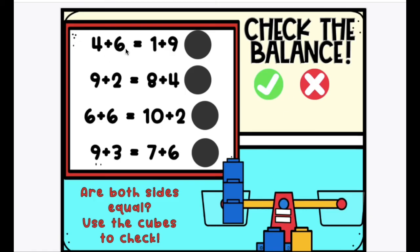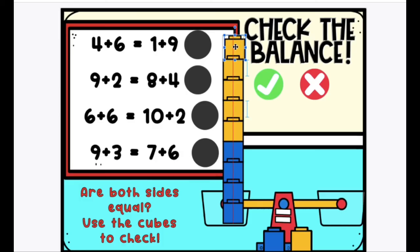4 plus 6 equals 1 plus 9. Do you think yes or no? Well, let's check. 4 plus 6. You can use the cubes to check. When we are measuring, we line up the cubes end to end. Make sure they all touch and there are no gaps or overlaps.